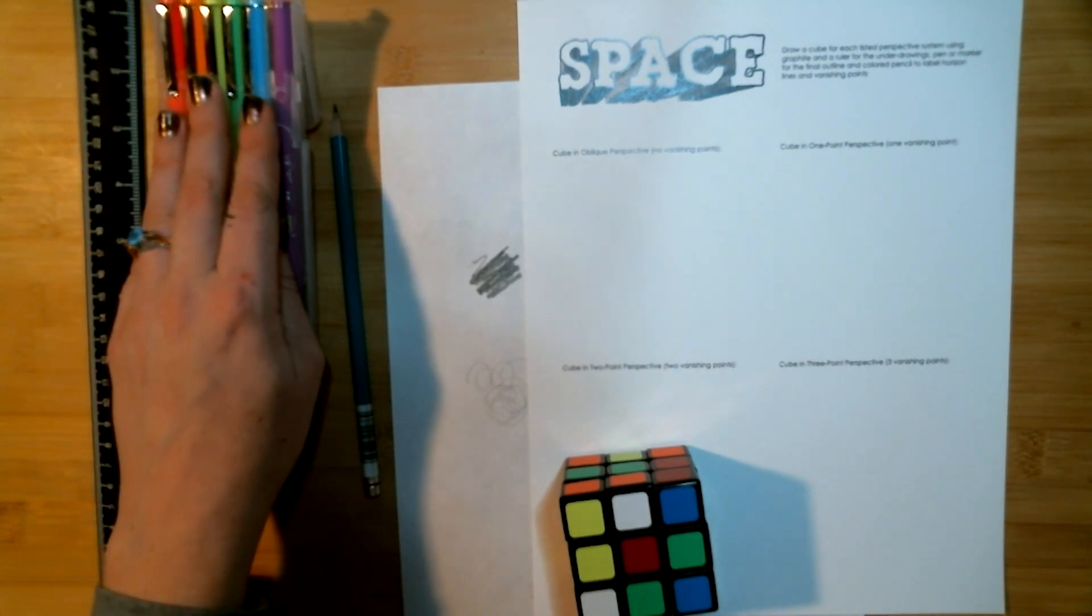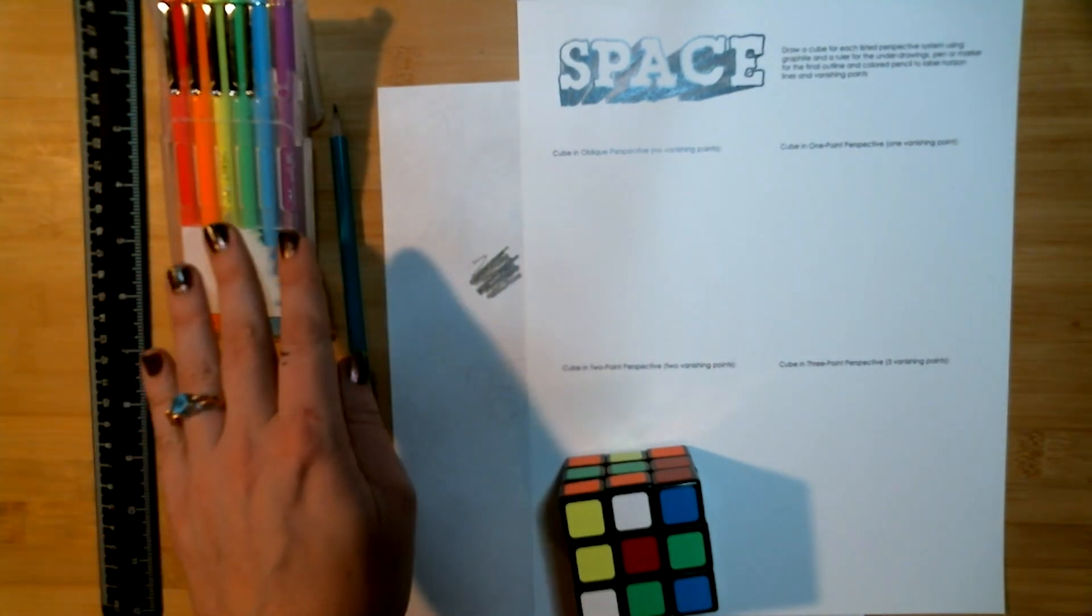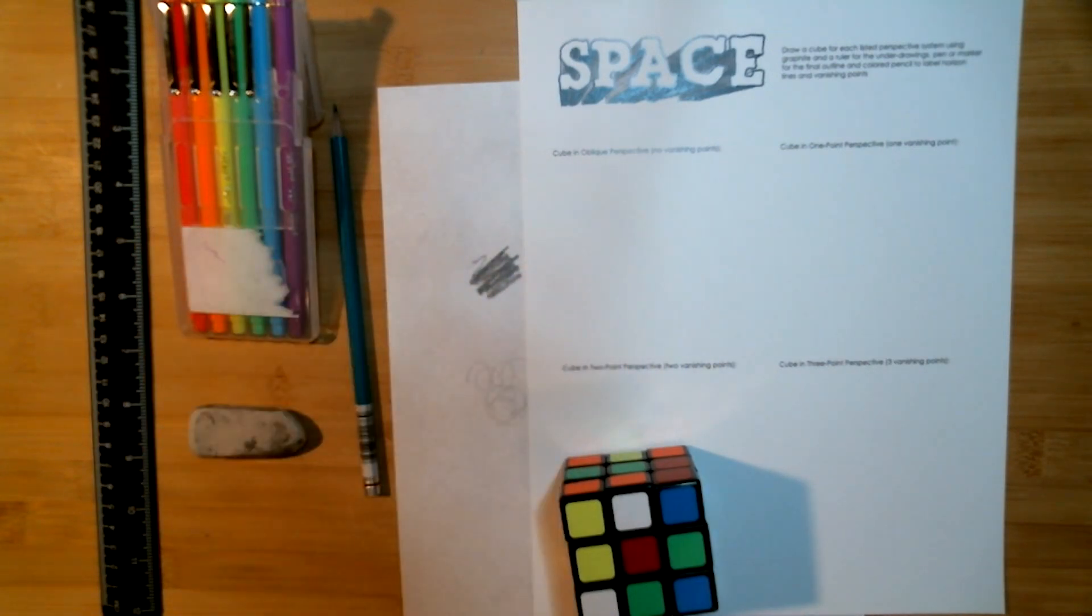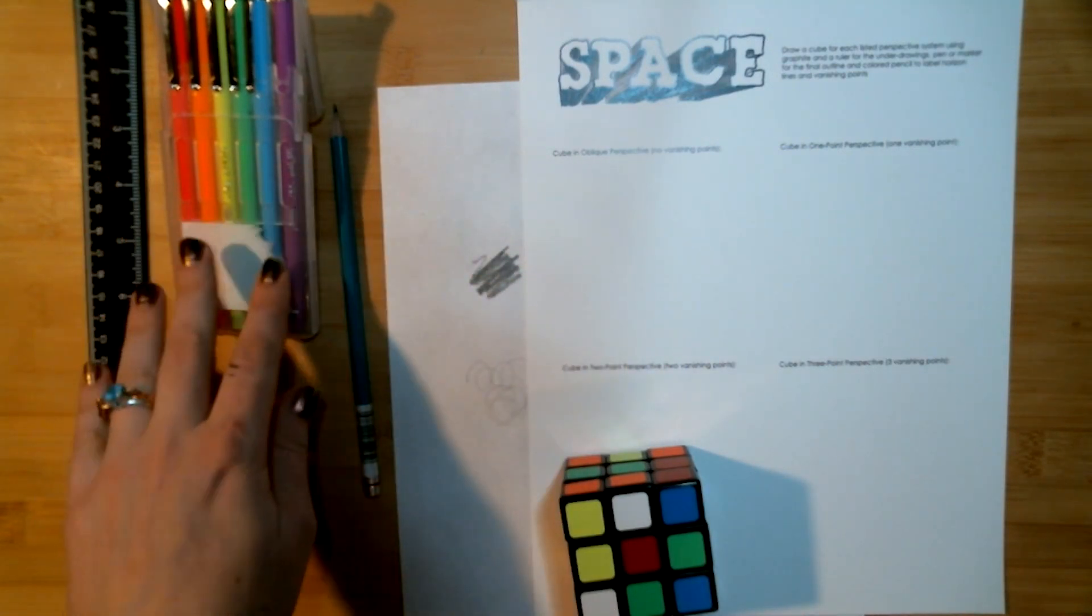You'll need to label your horizon lines and your vanishing points in color coding and I am today using pens, colored pens. You can use your colored pencils though if you'd prefer. I just prefer pens because they're a little bit less smudgy and we will be working with rulers.